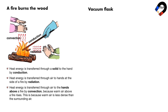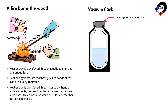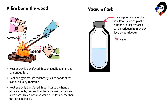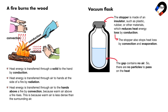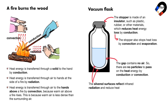In a vacuum flask, the stopper is made of an insulator such as plastic, rubber, or other materials, which reduces heat energy loss by conduction. The stopper also stops heat loss by convection and evaporation. The gap contains no air, so there are no particles to pass on heat energy by conduction or convection. The silvered surfaces reflect infrared radiation and reduce heat energy loss by radiation.